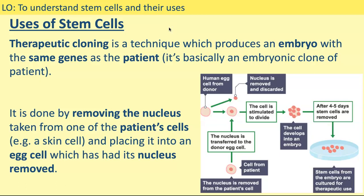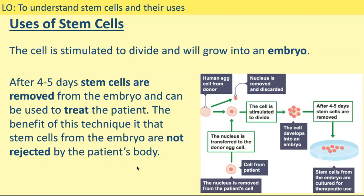If we go into more detail of the uses of stem cells, there is a technique called therapeutic cloning, which produces an embryo with the same genes as a patient. If a patient has a disease that needs treating, we can create an embryo that has the exact same genetics as the patient — essentially an embryonic clone of that patient. The process involves removing the nucleus from one of the patient's cells, for example a skin cell, placing that nucleus into an egg cell which has had its nucleus removed, then stimulating that cell to divide so it grows into an embryo. After about four or five days, the stem cells are removed from the embryo and can be used to treat the patient. The benefit is that the stem cells from the embryo are not going to be rejected by the patient's body.